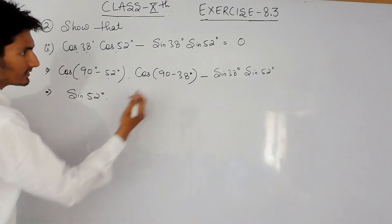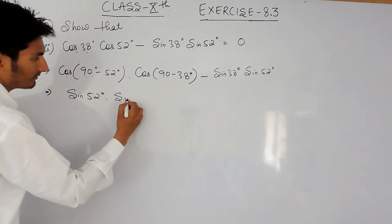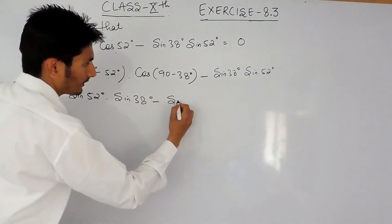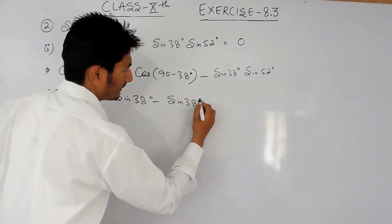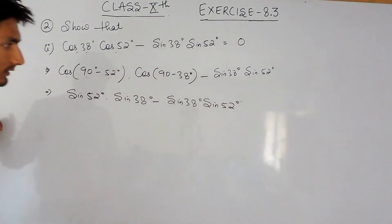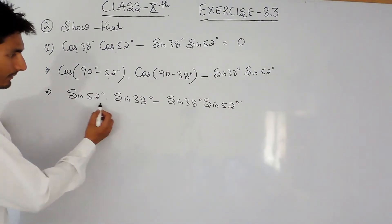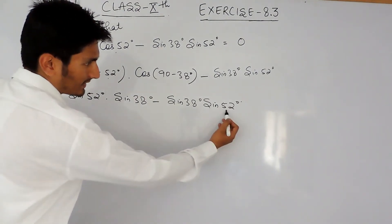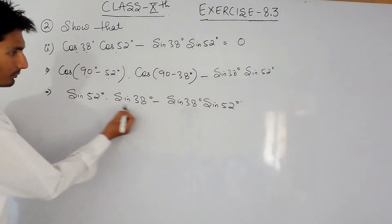And cos 90 minus theta will again be converted into sine theta. Now here it is sine theta multiplied by sine theta, here also it is sine theta multiplied by sine theta.